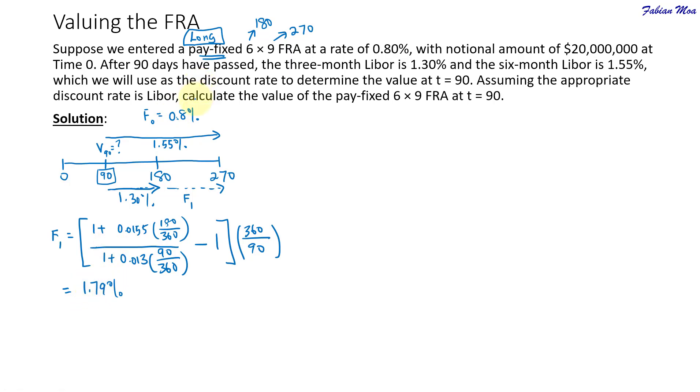As a long position, when the price of the asset or the underlying has increased, that is a gain to the long position. We can tell now that the long position in this FRA has a gain. How do you calculate the value of this gain on day 90?